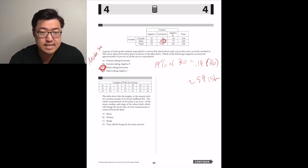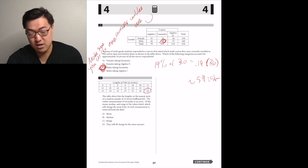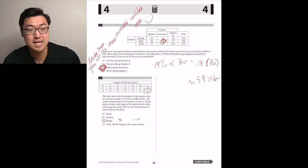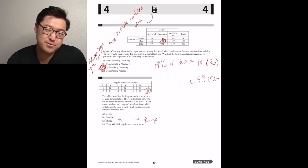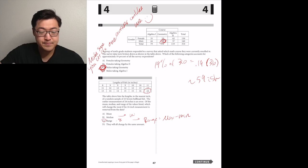The table above lists the length to the nearest inch of a random sample of 21 brown bullhead fish. The outlier measurement of 24 inches is an error. Of the mean, median, and range of the values listed, which will change the most if the 24-inch measurement is removed from the data? The 24-inch measurement is the largest. If we remove that, then the range is going to decrease by 8. And removing one value out of a chart of 21 things isn't going to decrease the median by 8 or the mean by 8. The mean would stay the same or just move over maybe one spot and the median would change like whatever 8 divided by 21 is. So I think it's C.